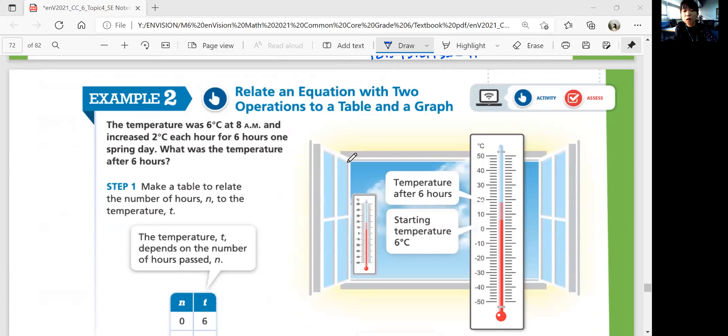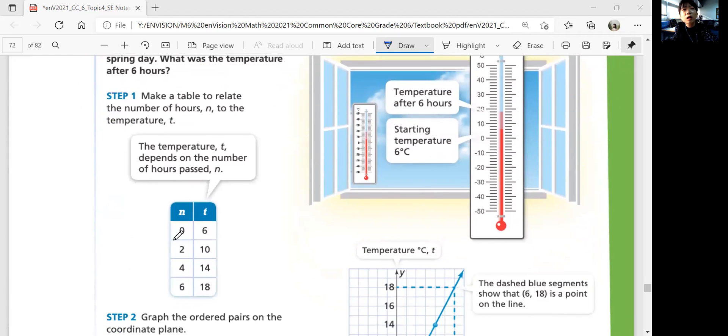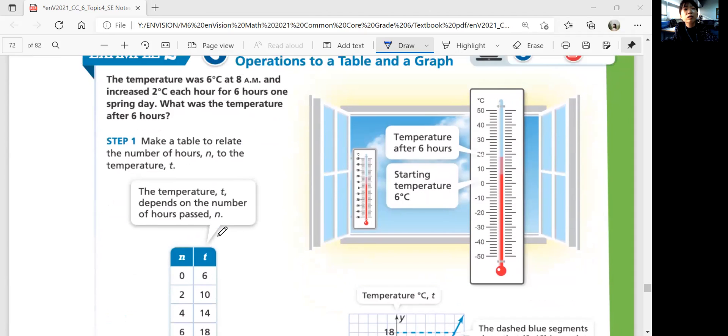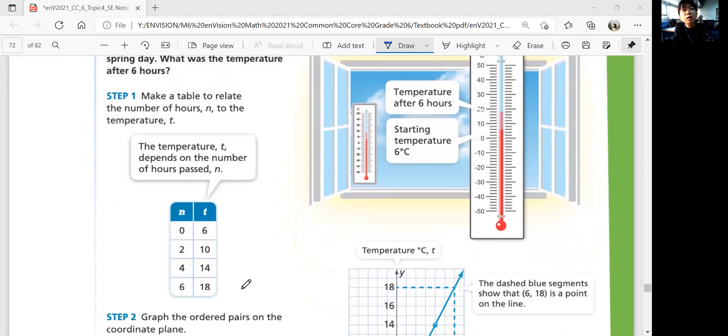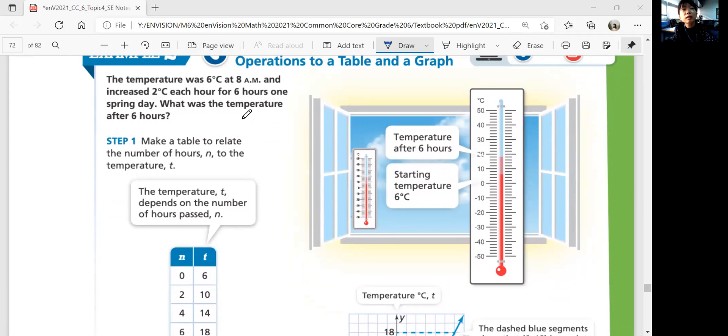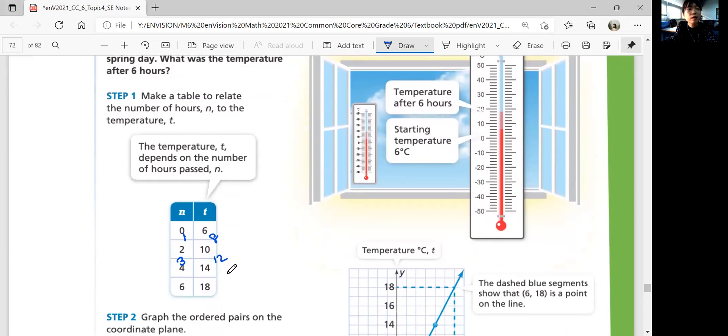Let's look at example two. Relate an equation with two operations to a table and a graph. The temperature was six degrees Celsius at 8 a.m. and increased two degrees Celsius each hour for six hours one spring day. What was the temperature after six hours? The starting temperature is six degrees Celsius. If you make a table, hour zero is six. You start there. And then every hour, it increases two degrees every hour. After two hours, it's 10 degrees. After one hour, it's going to be eight. After three hours, it's 12. Fourth hour, 14, and so on until the sixth hour, which is going to be 18.